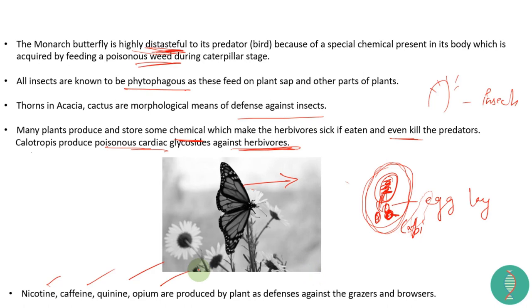Plants produce chemicals like nicotine, caffeine, quinine, and opium as defense mechanisms. Humans also use these chemicals — nicotine in cigarettes, caffeine in daily life, quinine to help treat malaria. These substances have significant value in the ecosystem and in human medicine.